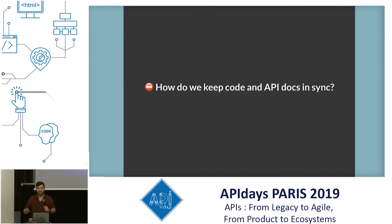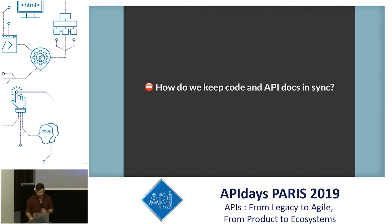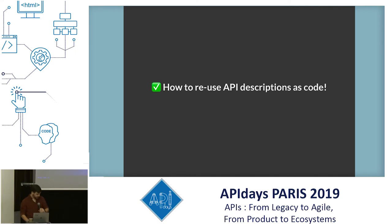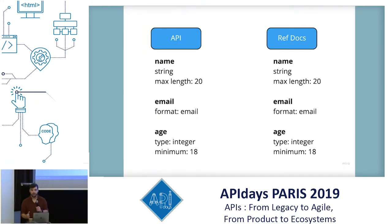So with all of those problems solved, the main question we have left is: how do you keep that stuff in sync? That problem still sounds like it exists. When you're trying to think about how to keep documentation in sync with code, don't think about documentation — think about API descriptions. So the real question is: how to use descriptions as code? Not code generation, that's a whole other thing. Basically, you have two sources of truth: the API and the reference documentation, which both have a lot of really similar information.